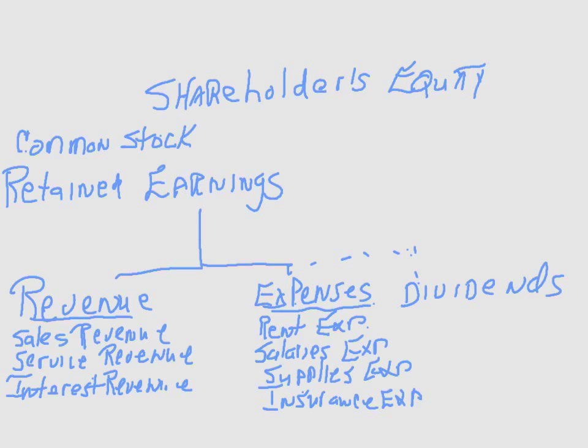The third category of accounts are the shareholders' equity accounts. Common stock represents the amount of money invested by the owners of the business into the business — the owners invested money, and the business provided them with common stock. Retained earnings is an account where we summarize the revenues, expenses, and dividends. So let's go to that — we have revenue accounts.